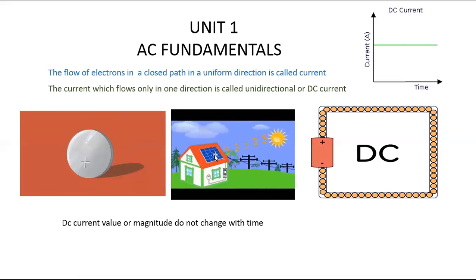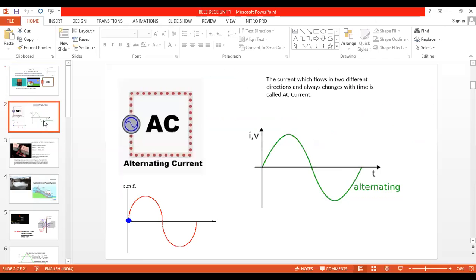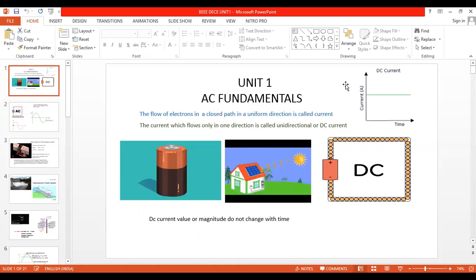Now our main topic for today's class is AC current. In your house, in the switchboards, you are getting AC current. The word AC stands for alternating — alternating means changing, varying, continuously changing. The value of AC current is not constant; it always changes with time. When defining DC current in the exam, first draw the graph — a horizontal straight line showing constant value.